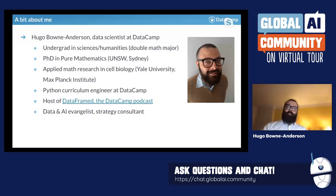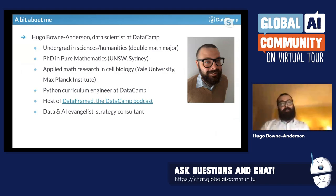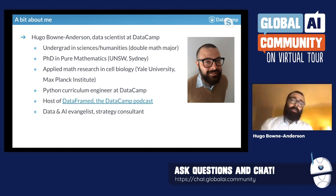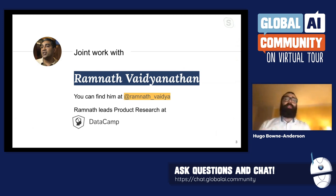Eva introduced me wonderfully. This is a photo of me when I'm out of quarantine — currently I don't even have a beard trimmer. I'm a data scientist at DataCamp. I also do a lot of data and AI evangelism and AI strategy consultancy work. My PhD was in pure maths, then I worked in applied maths research in cell biology, and then I built out the foundational Python curriculum at DataCamp. I also hosted a podcast called DataFramed, about the industry of data science and AI as a whole. The work I'm about to present is joint with many people at DataCamp, but I want to flag that my colleague Ramnath Vaidjanathan, who leads product research, was essential to today's work.